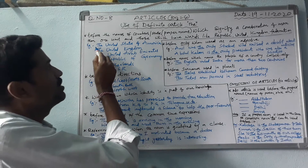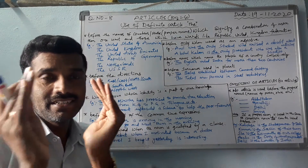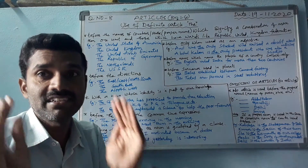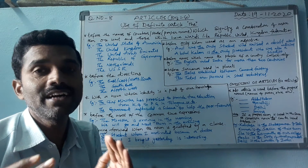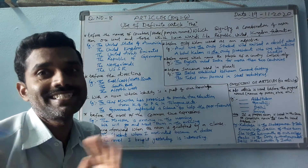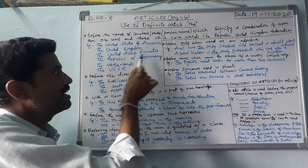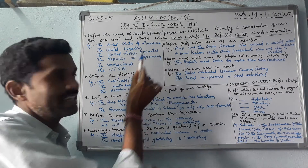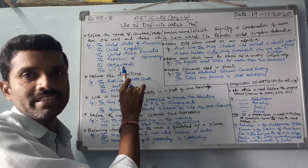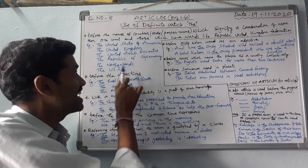For example: the United States of America consists of 50 states, that's why it is called 'the United States of America' — USA. Similarly, the United Kingdom, the United Arab Emirates, the Republic of Germany, the Netherlands, the USSR.